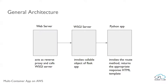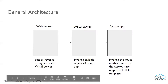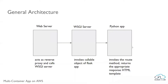WSGI is now the accepted approach for running Python web applications. The WSGI server stands for Web Server Gateway Interface. It is like a middleware between the web server and the Python app. The WSGI standard should be implemented by both the server side and the application side.